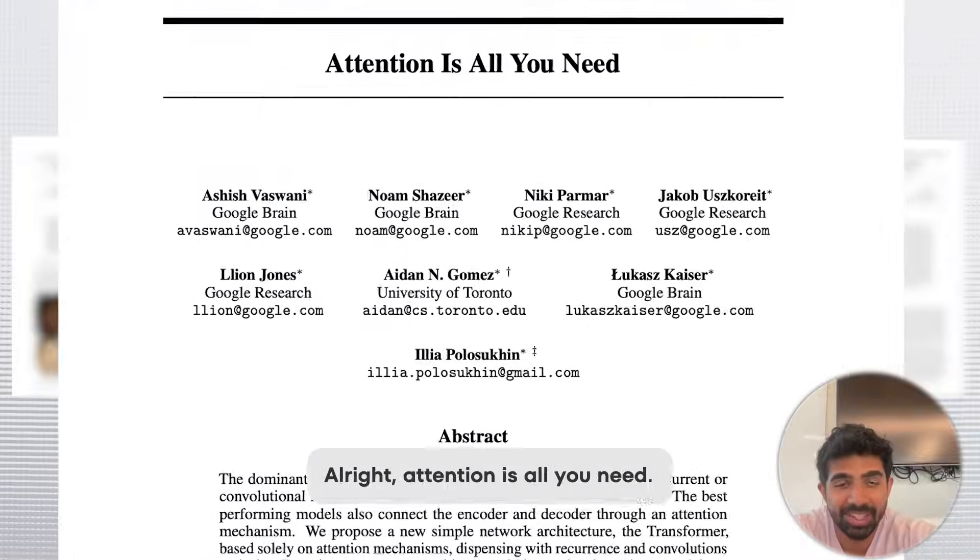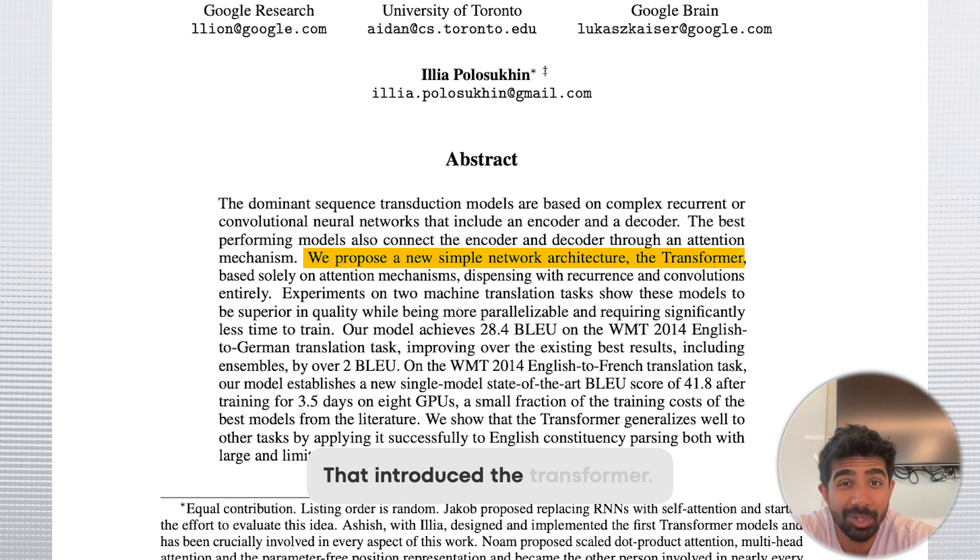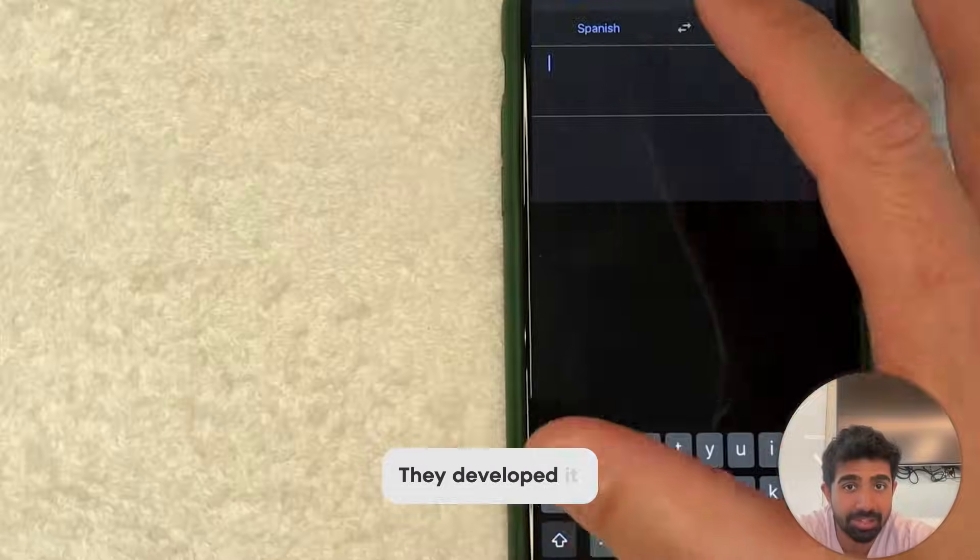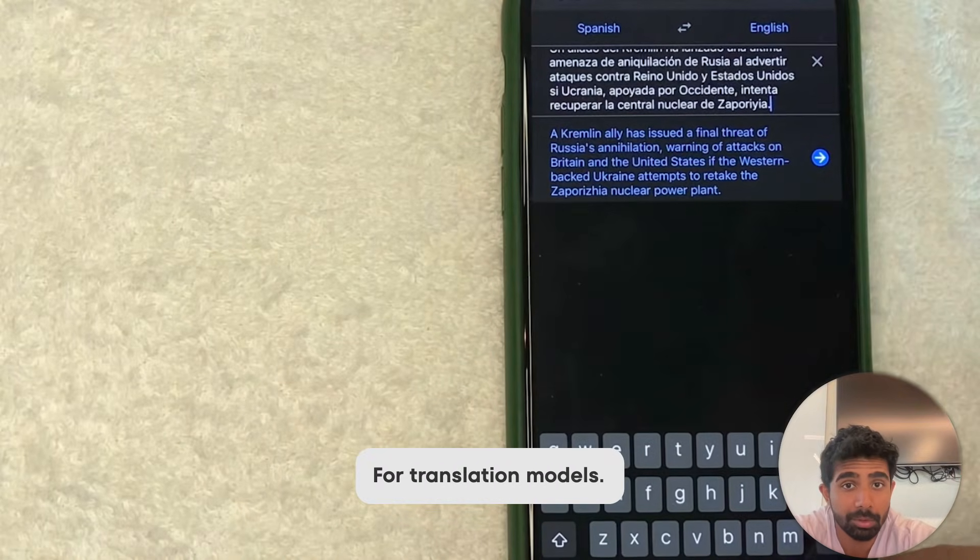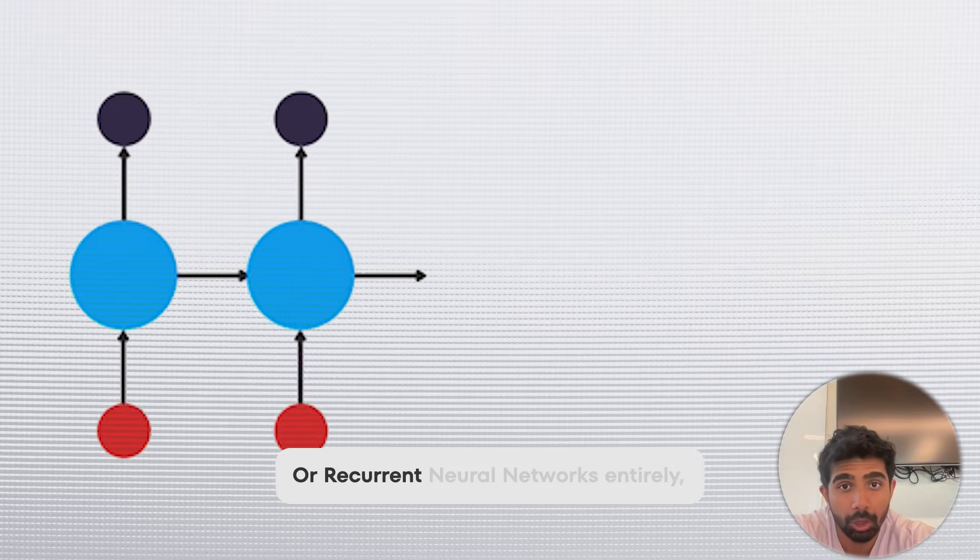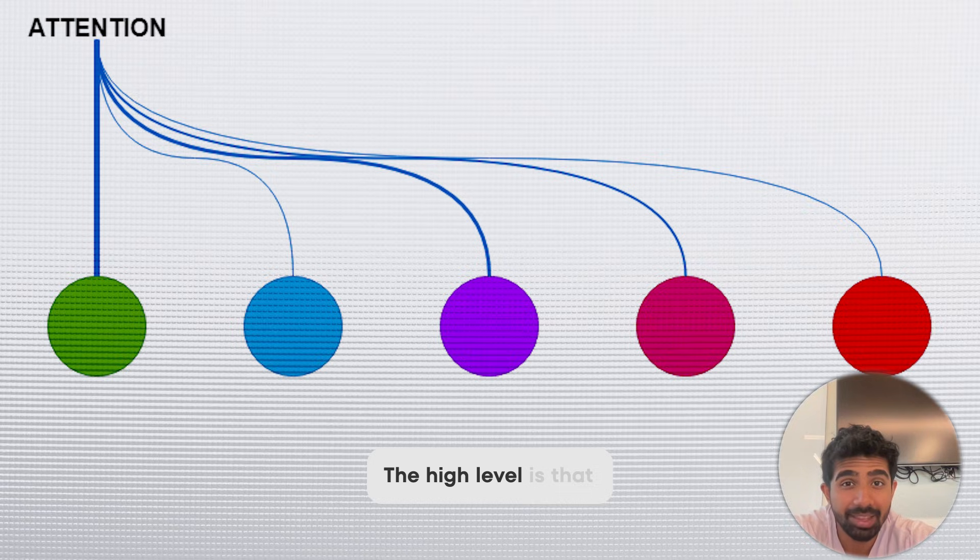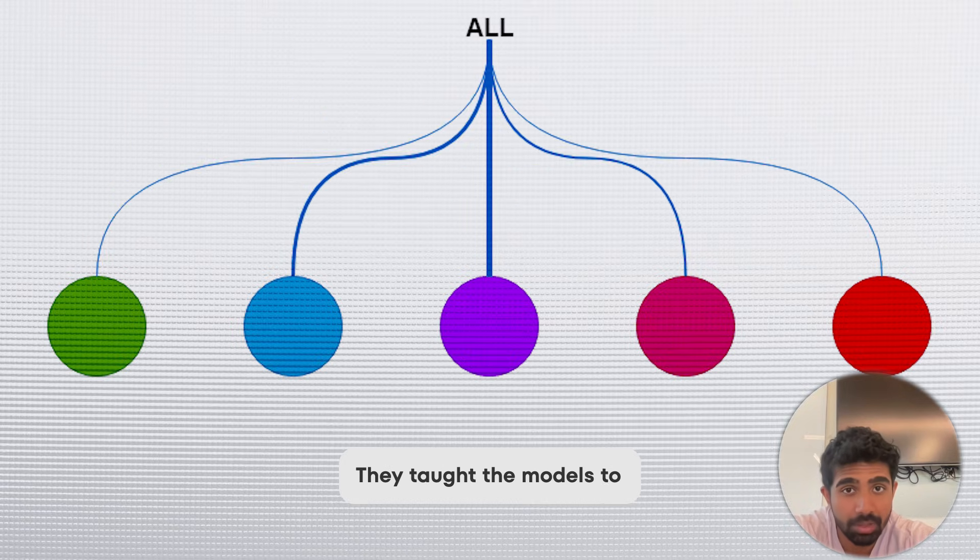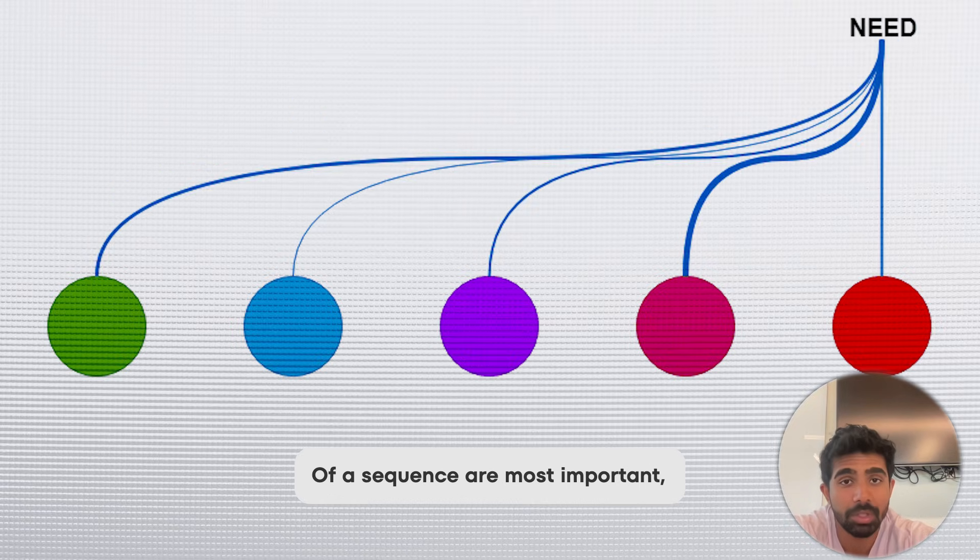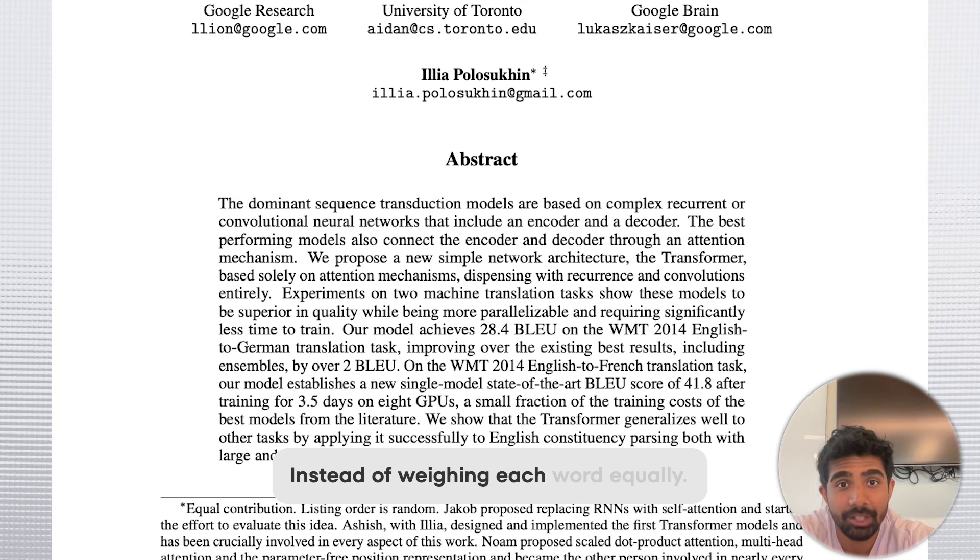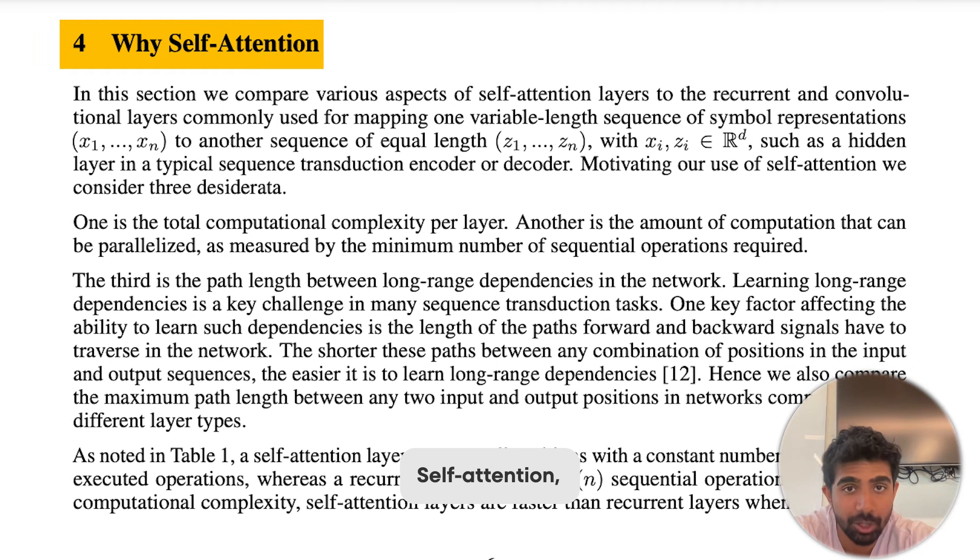Alright, attention is all you need. This is the 2017 paper from Google that introduced the Transformer. Interestingly enough, they didn't develop this model for chatbots, they developed it for translation models. They did away with RNNs, or recurrent neural networks, entirely, which hugely impacted deep learning. The high level is that they taught the models to pay attention to which parts of a sequence are most important, instead of weighing each word equally. Attention did exist before this paper, but the authors proposed a new kind of attention, self-attention, which led to significantly greater results.